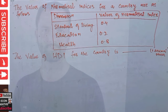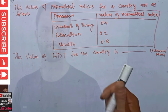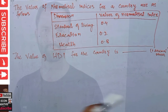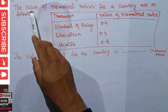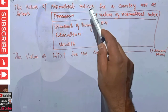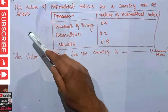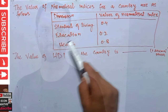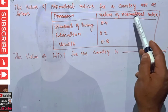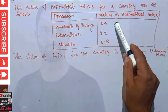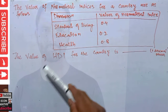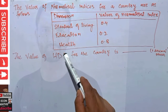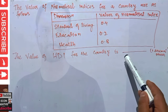Hi, this is Halal. In this video on the mathematical economics series, we will try to solve a problem that was asked in the GM Economics paper of 2021. The question is: the values of normalized indices for a country are given as follows — the dimensions are standard of living, education, and health, with normalized index values of 0.4, 0.2, and 0.8 respectively.